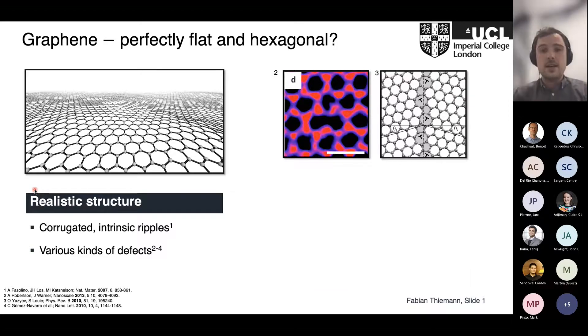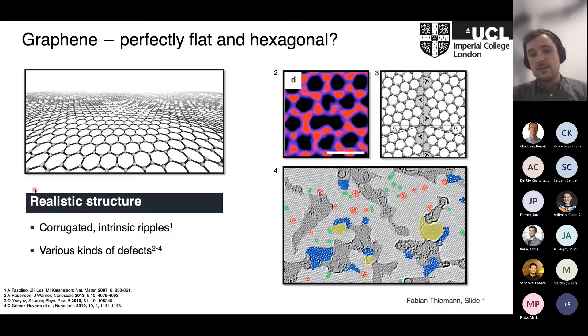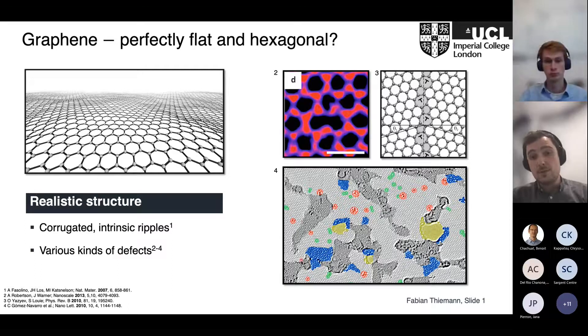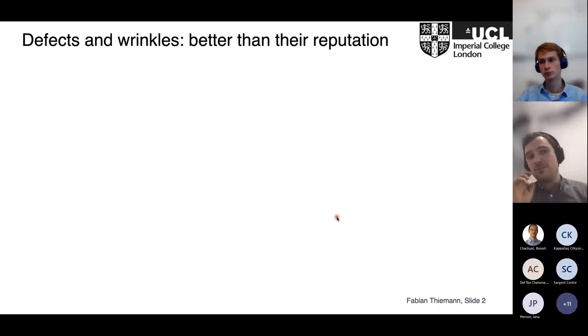To give you a flavor of how extreme that can get, here's a TEM image of graphene where you can see everything that is not colored in light gray corresponds to impurity and imperfection. This makes up to 40%, so we need to take this into account when we deal with graphene in real applications.